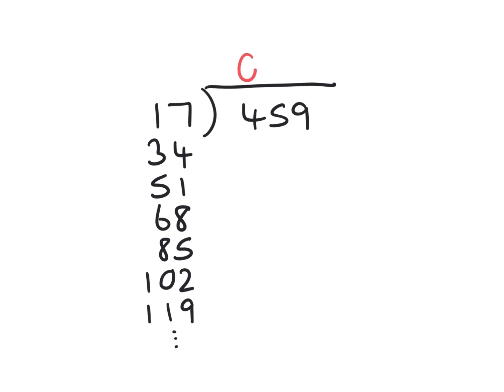17 into 4 won't go, so carry the unused 4 over. 17 into 45 will go twice—34 leaves 11 leftover. How many 17s fit into 119? That's going to be 1, 2, 3, 4, 5, 6, 7, giving us a final answer of 27.